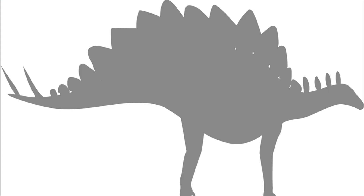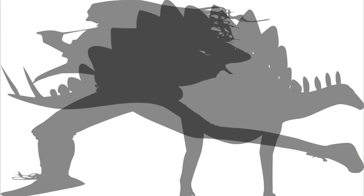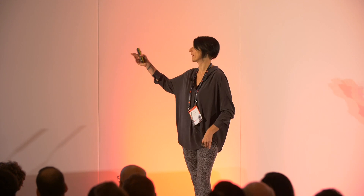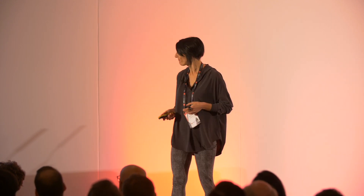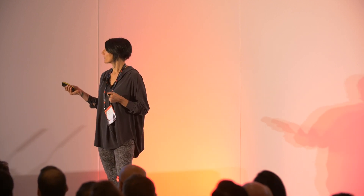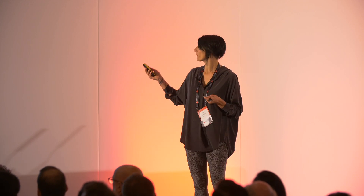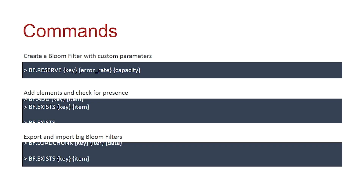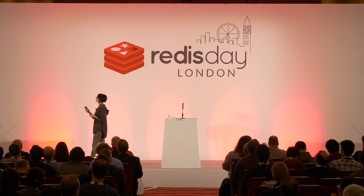How I like to visualize this: if you start adding too many elements, this just becomes a black blob, and after a while you can't really make out anything — you will just start getting false positives for everything. You can find any shape in a fully black image. The commands are very simple and intuitive. To reserve a filter: BF.RESERVE, specify the key name, the error rate, and the capacity. To add an element: BF.ADD, name of the key, value. To check: BF.EXISTS, name of the key, and value. That's all you need to start using the Bloom filter in Redis Bloom.